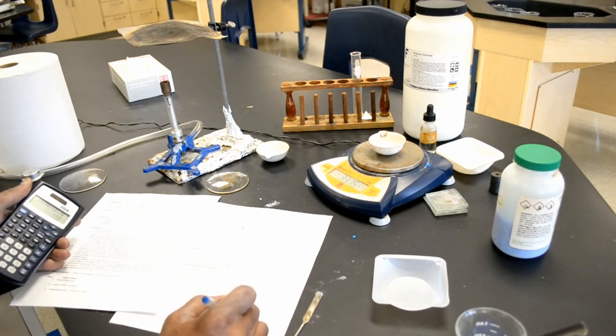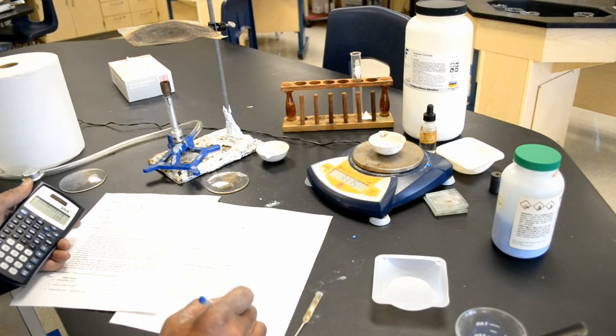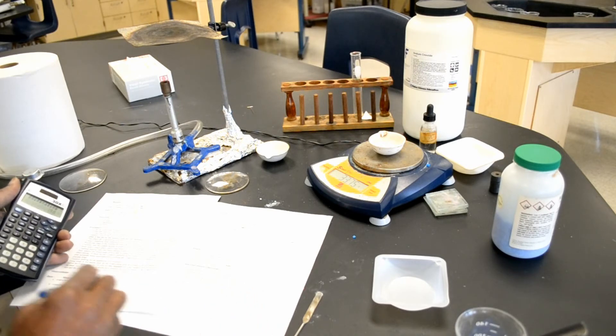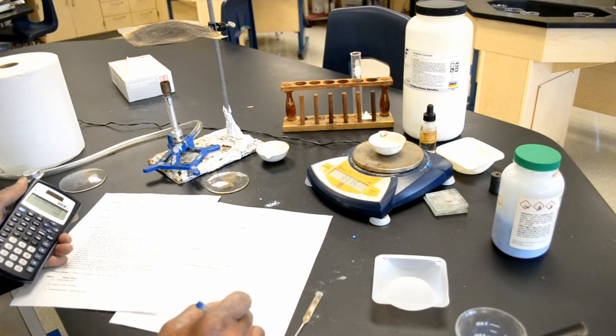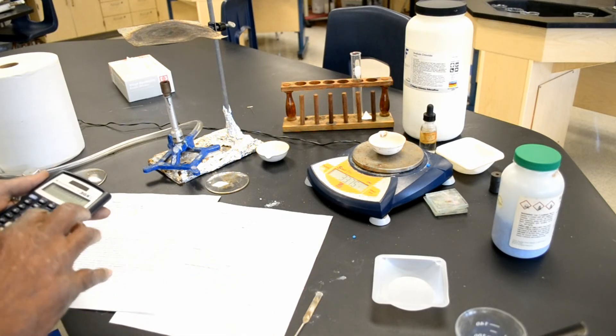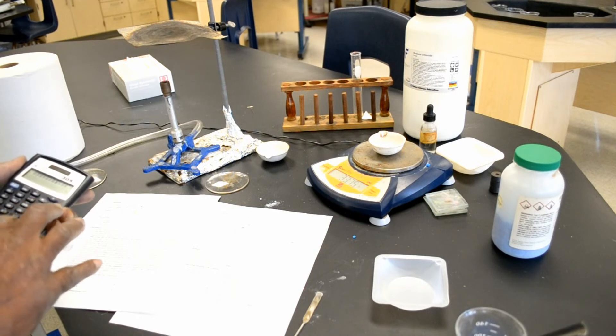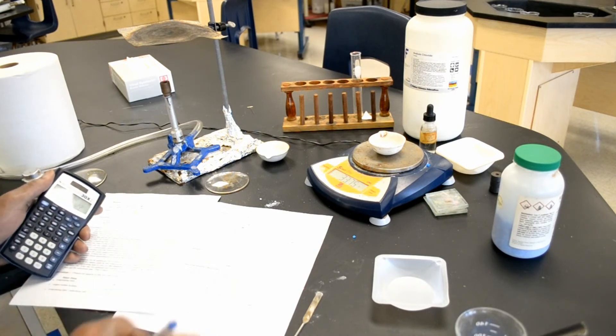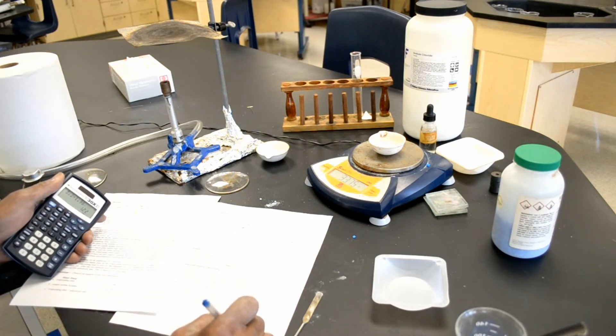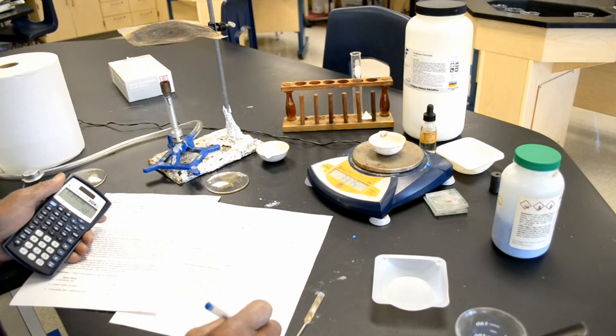Now, in order to find the amount of water loss, I have to subtract from 3.2, which was the mass of the copper sulfate hydrate. I'm going to subtract from that the mass of the anhydrous salt, which was 1.98. So, 3.2 minus 1.98 equals 1.22 grams of H2O.